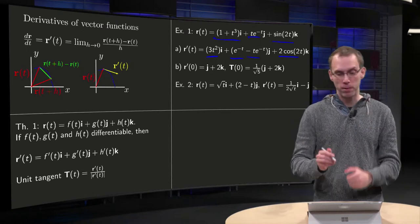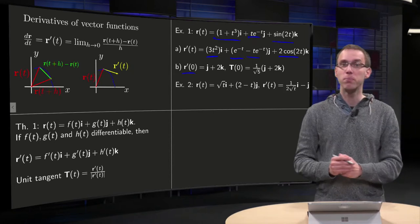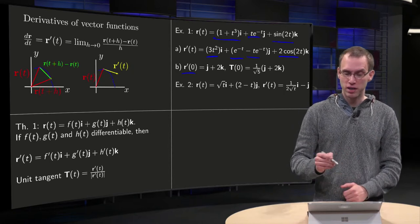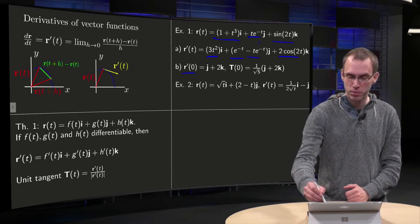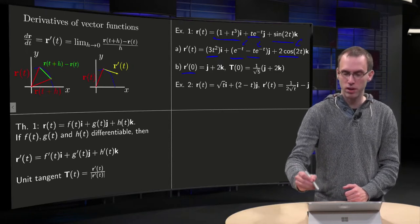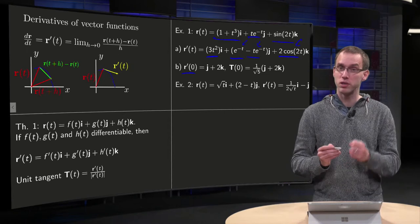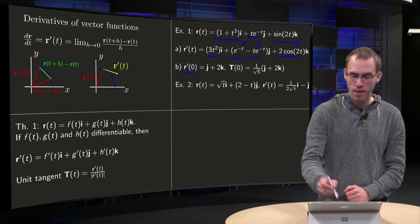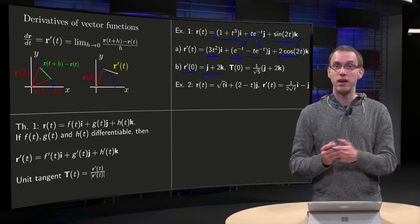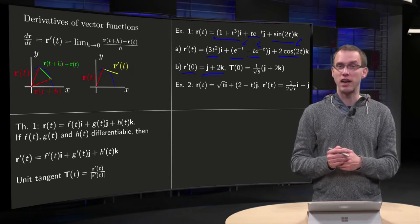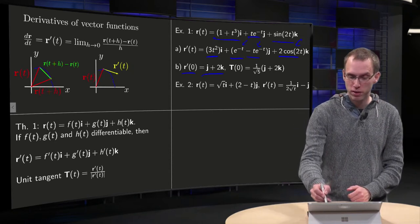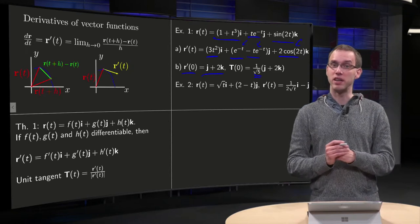And if you want to know for example r'(0), you plug in t equals 0 and r', so the first term drops out, for the second term this part drops out, and here you get a 1. And for the third term we plug in t equals 0 over there, so we get a 2. So r'(0) equals j plus 2k, and a unit vector, just divide by its length. The length squared equals 1² + 2² equals 5, so you have to divide by the square root of 5 to find the unit tangent in 0.